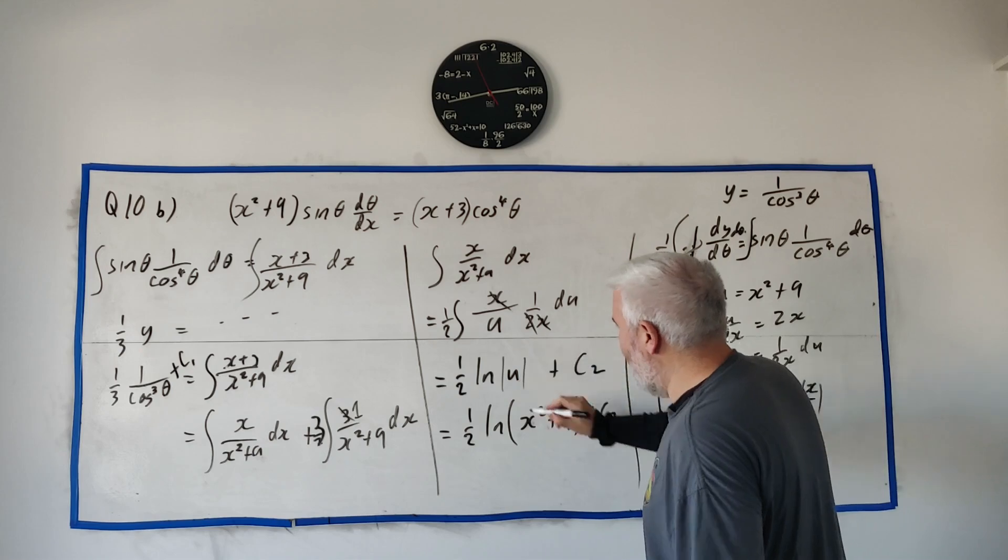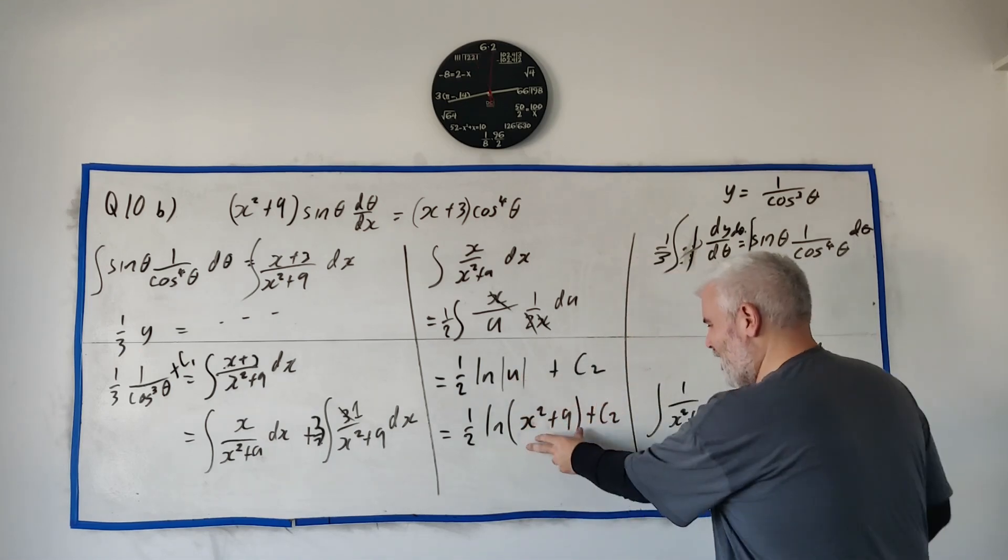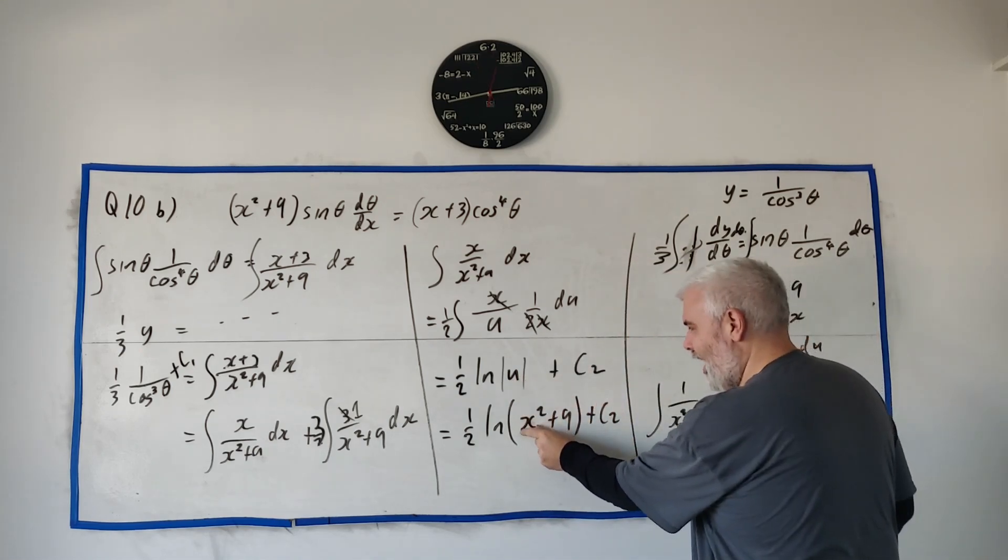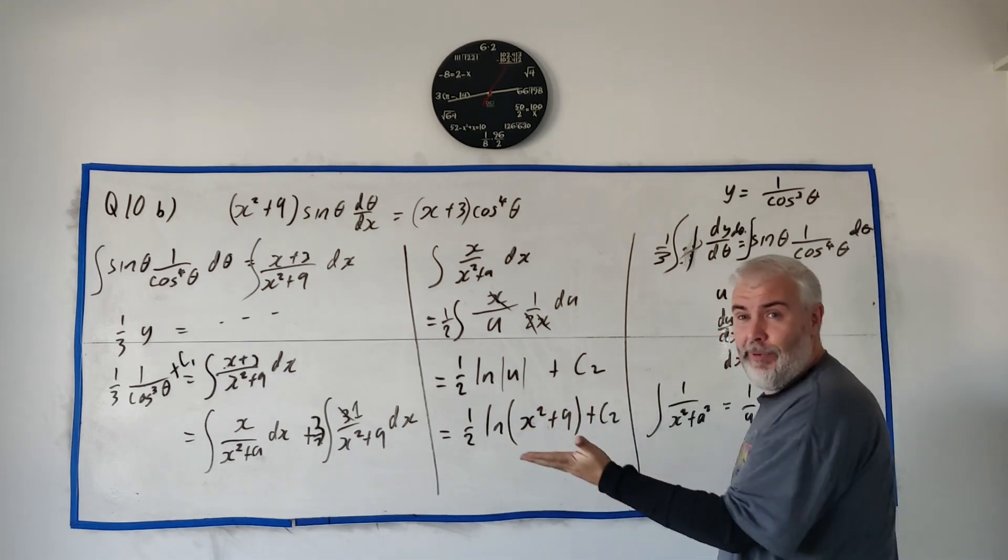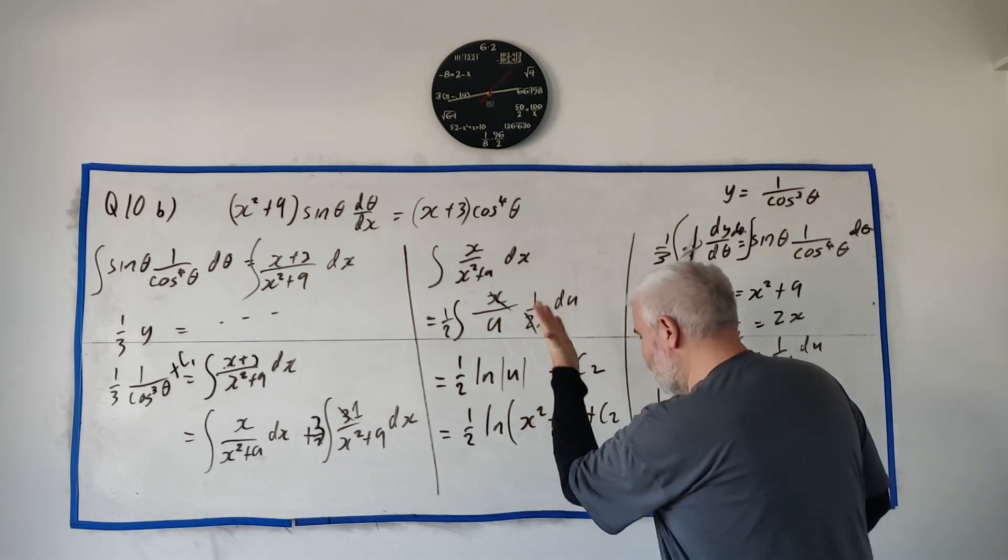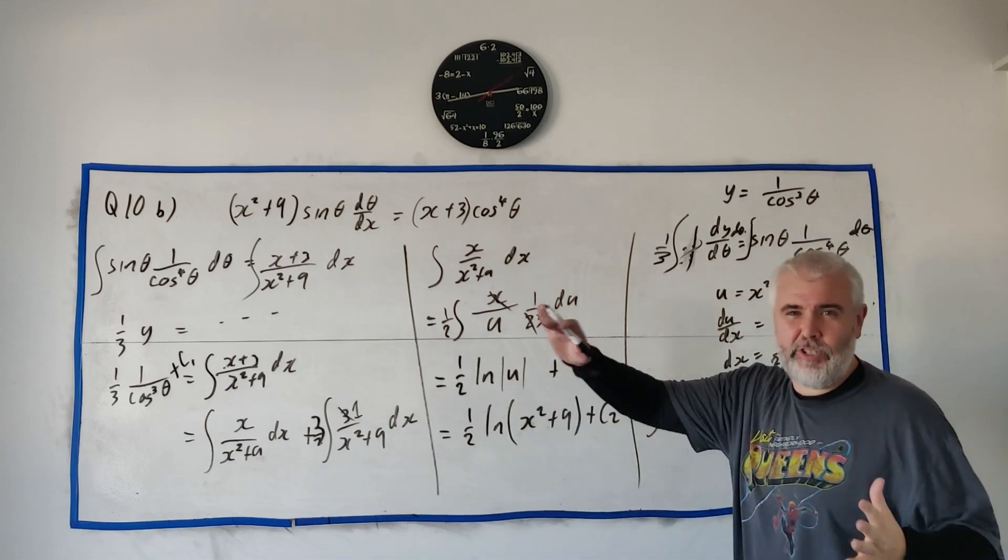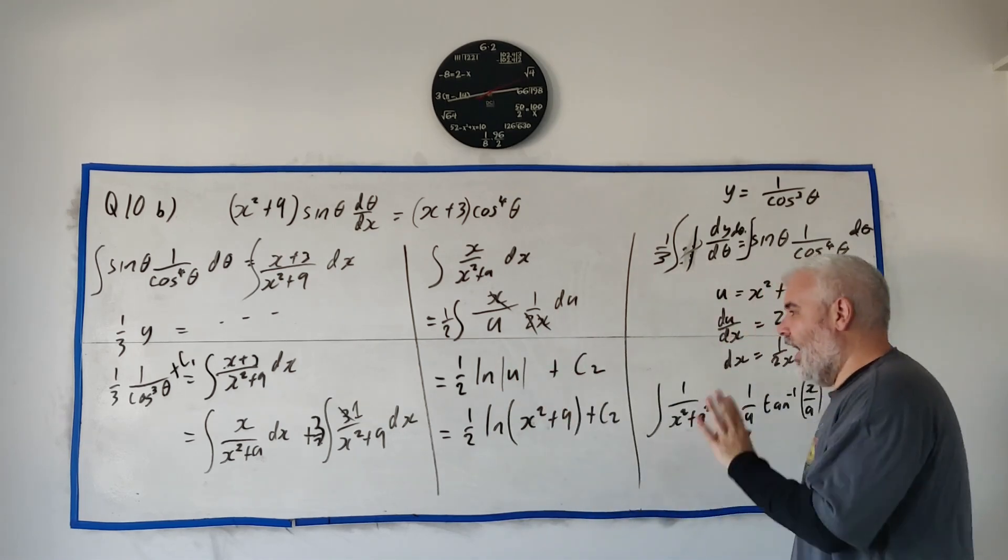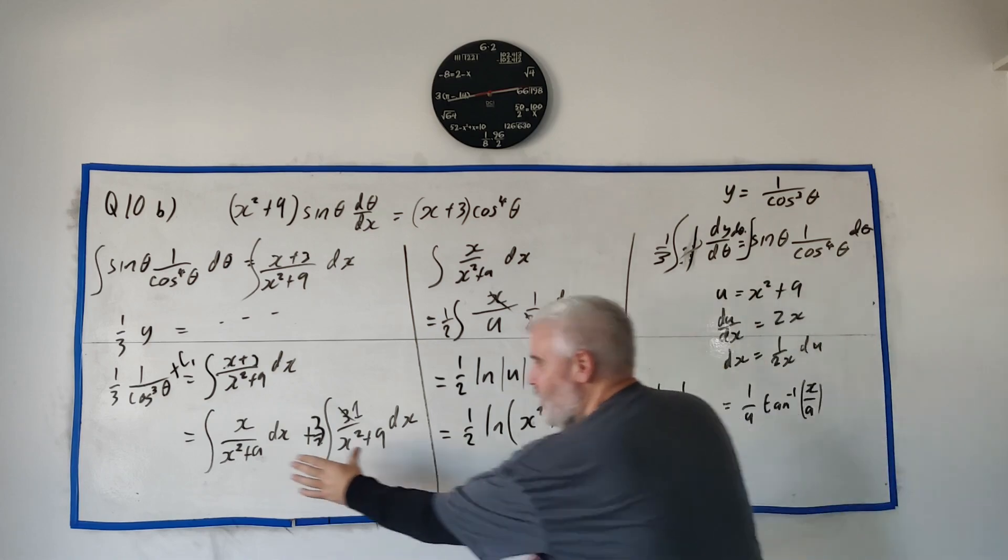Often you see the absolute value of u. We don't have to worry about that here because x squared is positive, 9 is positive, so we know this is positive. Sometimes you do need to be careful. That's the answer to this part.